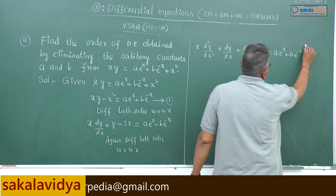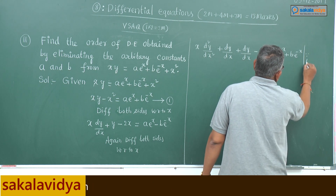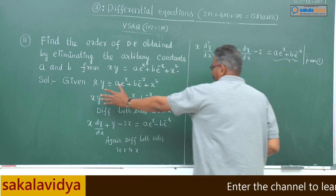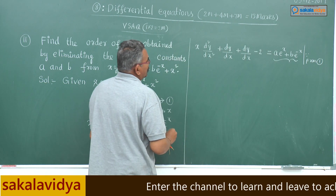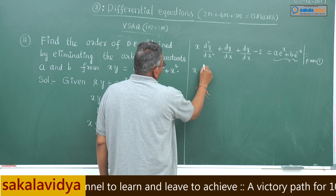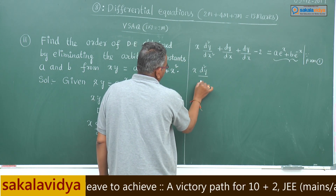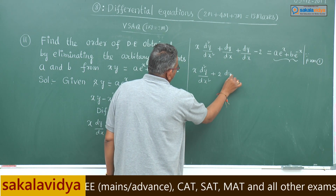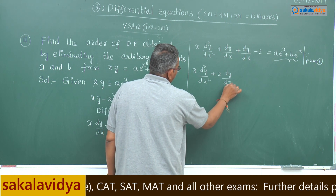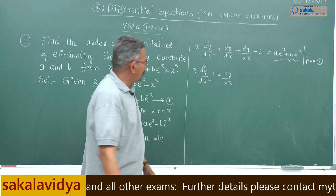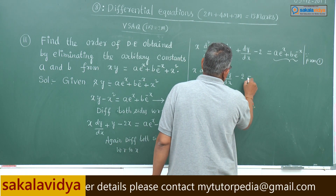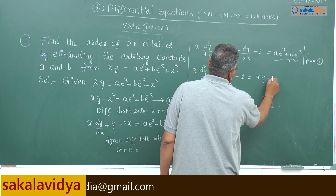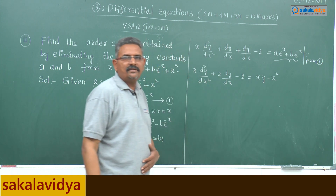From equation 1, ae^x + be^(-x) = xy - x². Substituting this, we can write: x(d²y/dx²) + 2(dy/dx) - 2 = xy - x². This is the required differential equation.